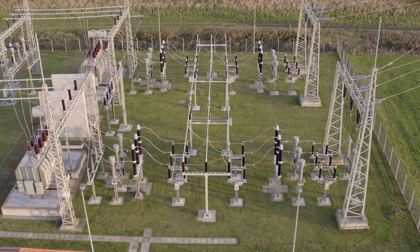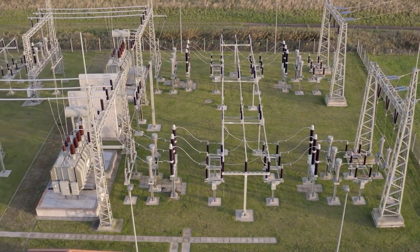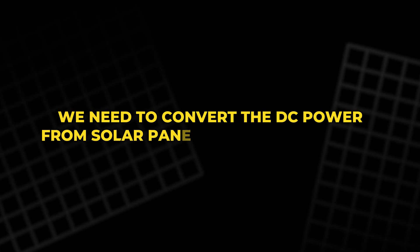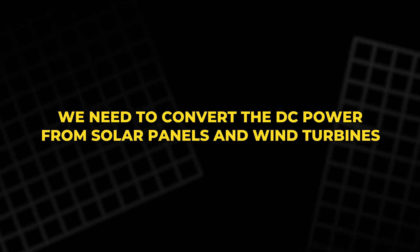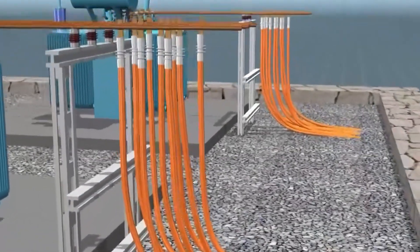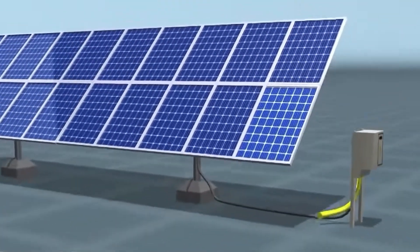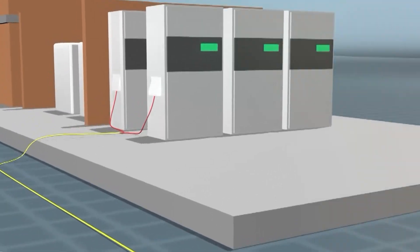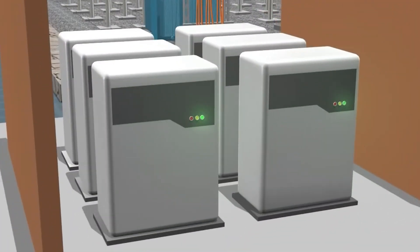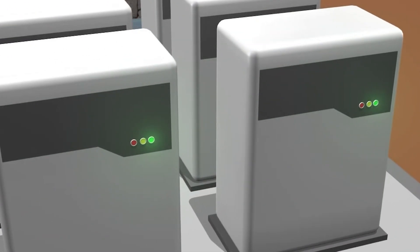To make this renewable energy usable on the traditional power grid, we need to convert the DC power from solar panels and wind turbines into AC power, which is the standard for most of the grid. The process of converting DC to AC is handled by inverters, which are designed to match the frequency and phase of the AC grid.